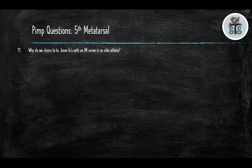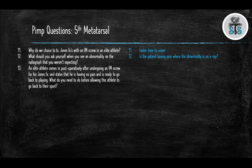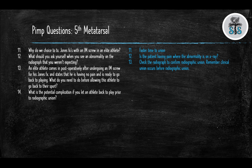Why do we treat Jones fractures with an intramedullary screw in elite athletes? Faster time to union. What should you ask when you see an unexpected abnormality on radiograph? Is the patient having pain where the abnormality is on x-ray? If an elite athlete post-operatively states he has no pain and wants to return to play, what must you do? Check the radiograph to confirm radiographic union — clinical union occurs before radiographic union. Allowing return to play before radiographic union risks fixation failure, refracture, or non-union. What is the treatment for a non-displaced pseudo-Jones fracture? Protected weight bearing.